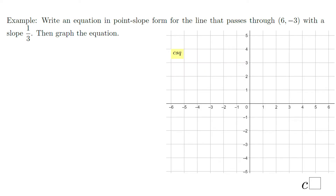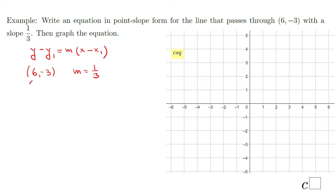Let's look at this example: write an equation in point-slope form for the line that passes through (6, -3) with a slope of 1/3. I'm going to write the point-slope form: y minus y1 equals m times x minus x1. We'll plug in the point (6, -3) and the slope of 1/3. This is x1 and this is y1.